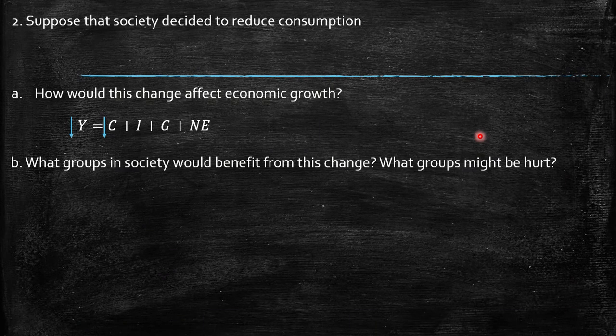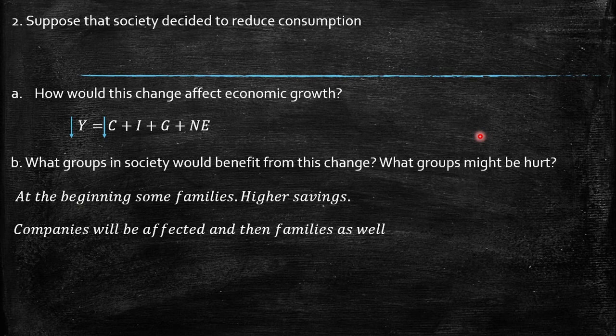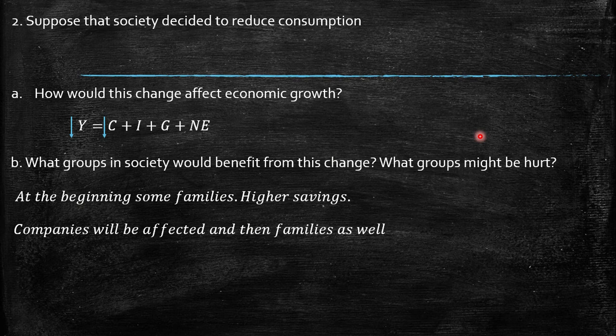And what groups in society would benefit from this change, and which groups might be hurt? At the beginning, some families could benefit because higher savings can be achieved, allowing them to experience better welfare in the future. However, companies would be affected, and then families as well, because consumption comes from the production of companies. When there is a reduction of consumption, demand decreases, and companies adjust their production, providing fewer goods and services to the market.